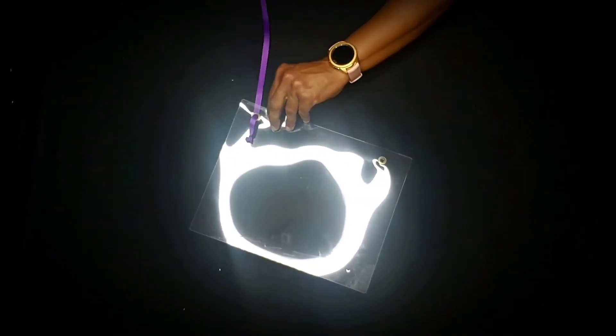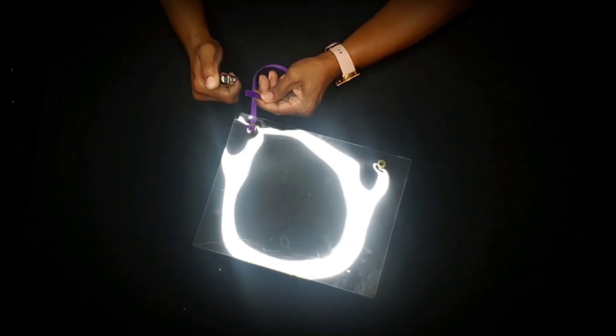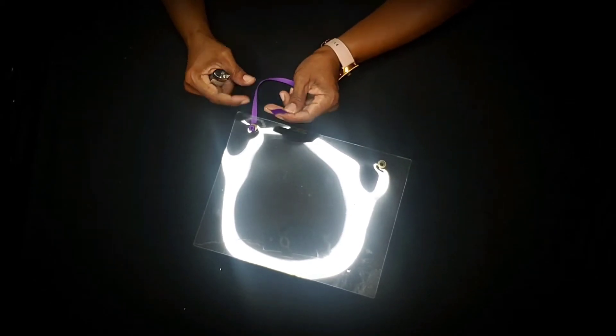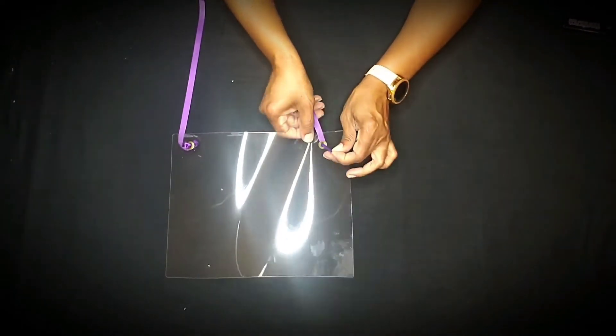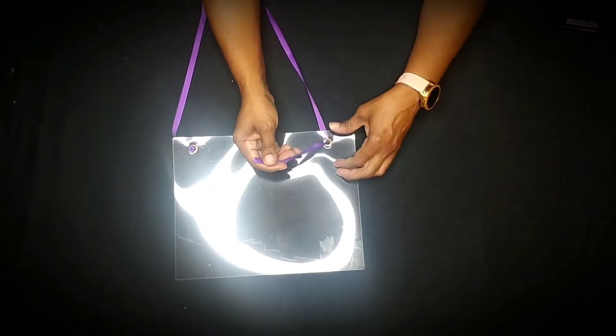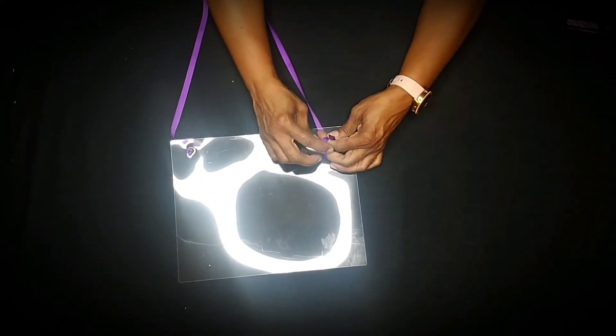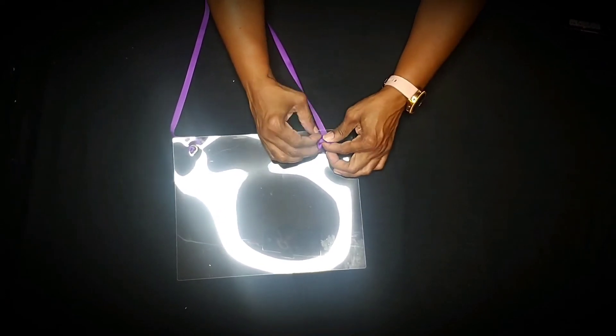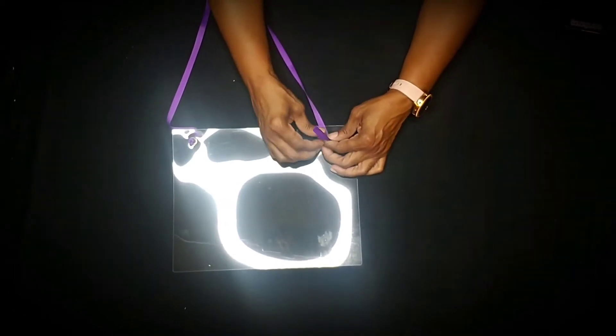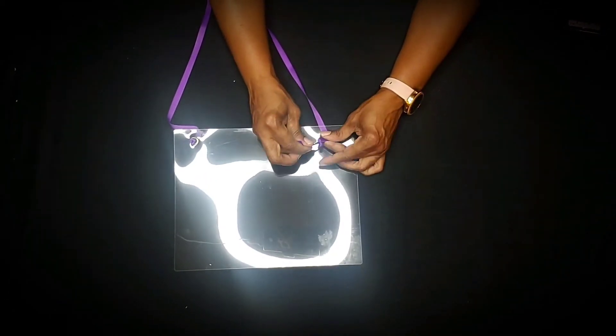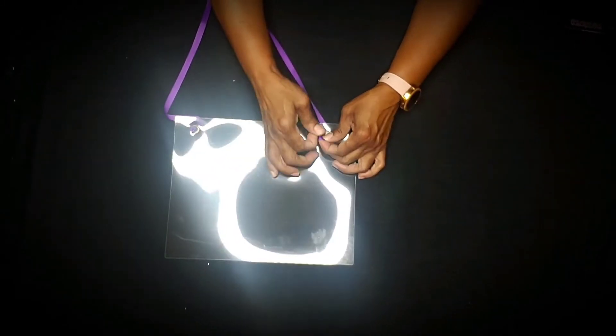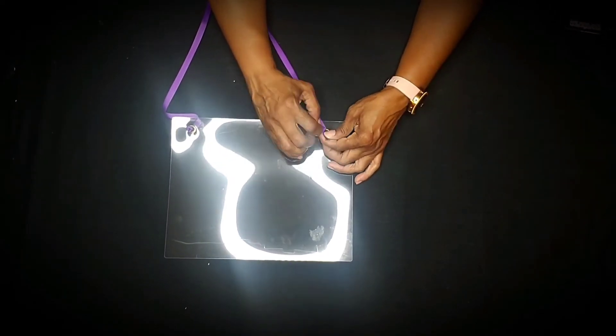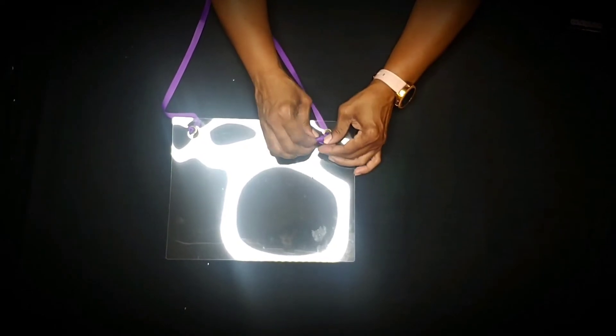Then you're going to take this and burn the thread so it doesn't rattle. Usually I do it both at the same time, but I want to show you guys one at a time on how to do it. So thread it through, tie it in a knot three to four times, and make sure it's big enough so it doesn't go through that hole.